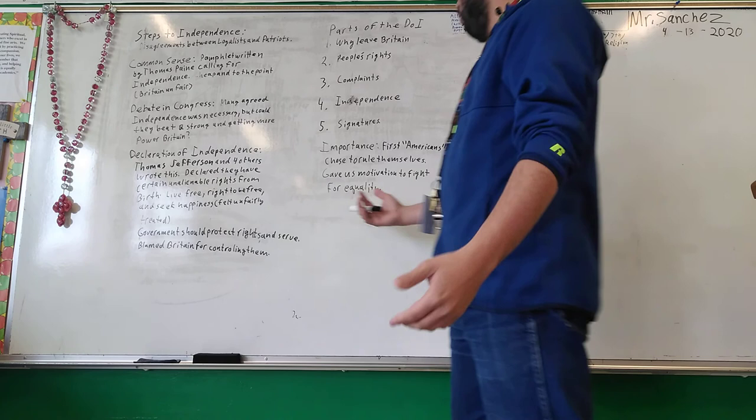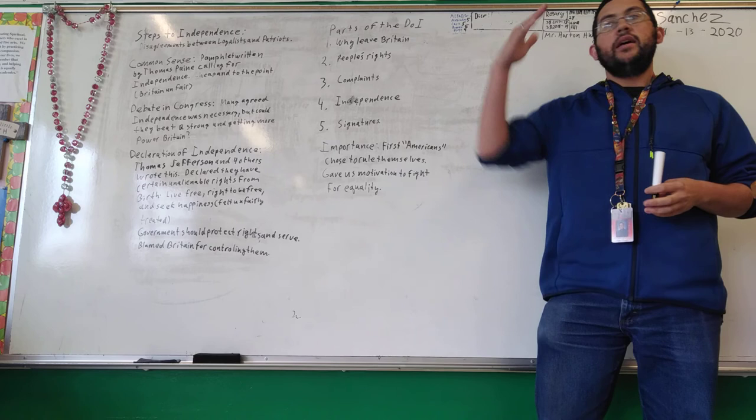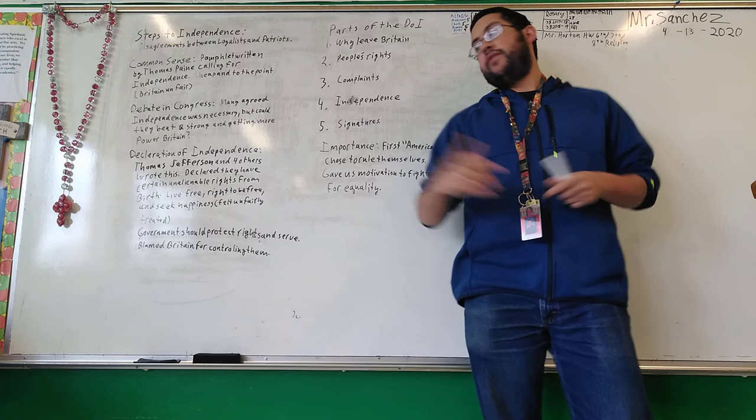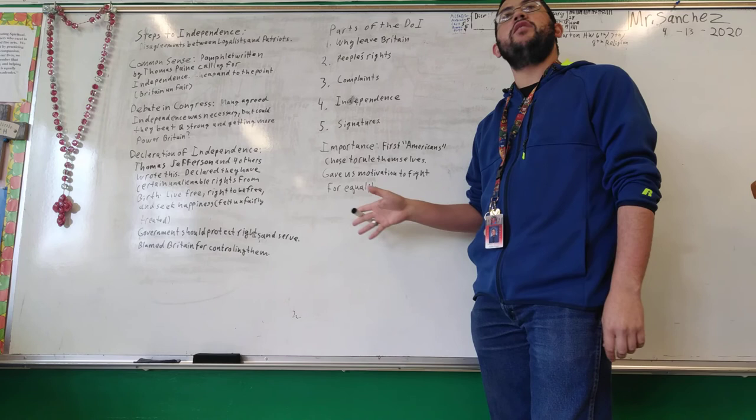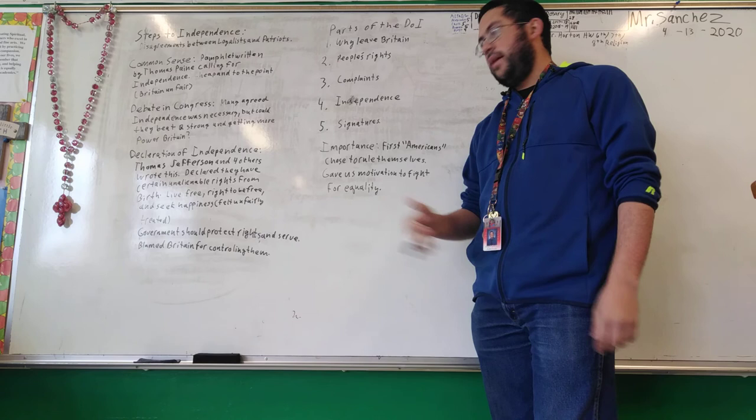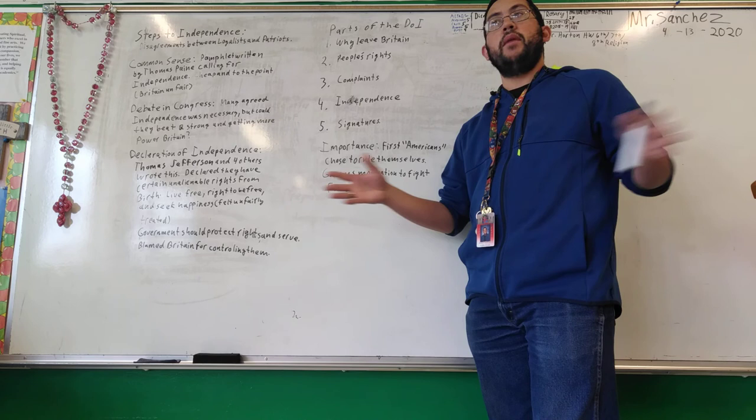And now we see the importance of the Declaration. It's the first Americans—because they're technically not Americans yet—declaring their independence. So do you consider them the first Americans because they declared independence that day, or will you consider the first Americans the ones who actually succeed with this and get away from Britain? But regardless, it's the first Americans to choose to rule for themselves. And then later on, you'll see this gives us the motivation we need to get equality for everyone. Because you have to remember when this was made, they were just thinking about white men who own property. Then it became white men in general, then every race, women as well. So we do that because they say it's supposed to be made equal, we all have equal rights. This would be used for that.